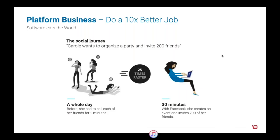If we analyze these big tech companies, what are the models they operate on? What do they do extremely well? They do a 10 times better job. Here's a typical social journey: Carol wants to organize a party and invite 200 friends. In the old world you'd basically pick up the phone and engage in many conversations, but right now with a digital platform this can be done in under 30 minutes. It's a simple job to be done, enabled by network effects and the platform's digital capabilities. It seems trivial, but it's very impactful.